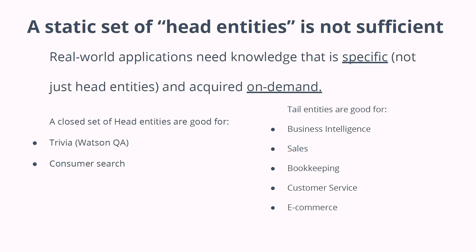It needs to be able to automatically discover new knowledge on the fly. A closed set of head entities — if you think about how many actual useful applications there are of these general knowledge graphs — basically it's trivia, like Watson QA, it's consumer search. If you're Google, you can optimize for head queries, put the most popular things like Taylor Swift, and make a knowledge panel for it.